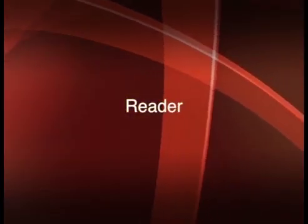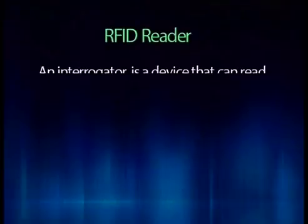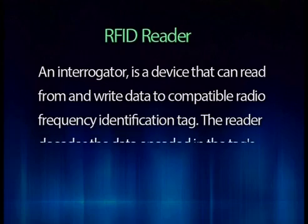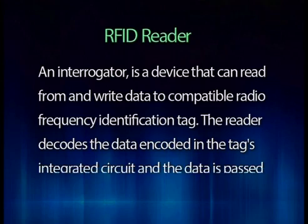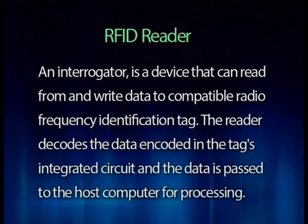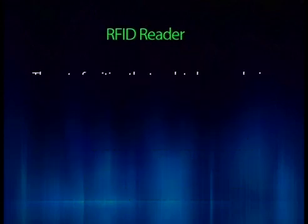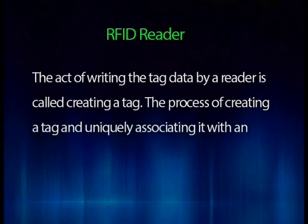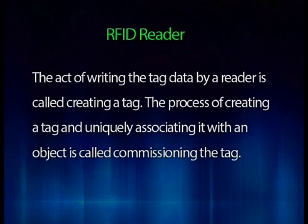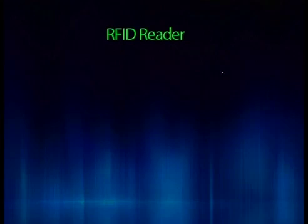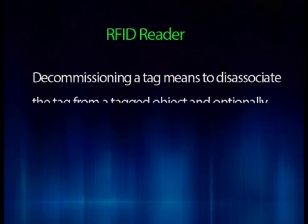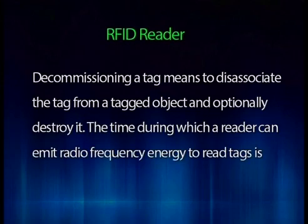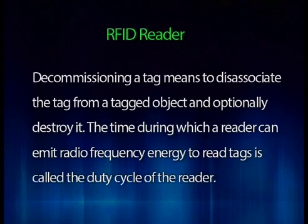The second component is the reader. A radio frequency identification reader, also called an interrogator, is a device that can read from and write data to a compatible RFID tag. The reader decodes the data encoded in the tag's integrated circuit, and the data is passed to the host computer for processing. The act of writing tag data by a reader is called creating a tag. The process of creating a tag and uniquely associating it with an object is called commissioning the tag. Decommissioning a tag means to disassociate the tag from a tagged object with an option to destroy the tag thereafter. The time during which a reader can emit radio frequency energy to read tags is called the duty cycle of the reader.